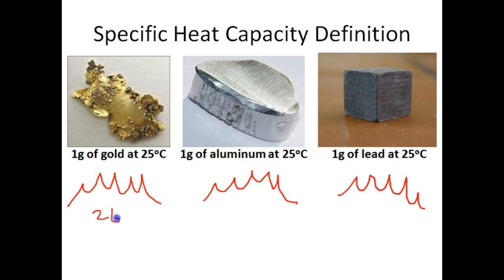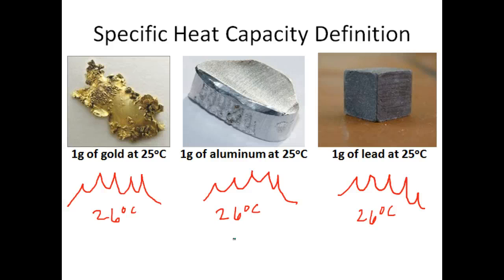We want to raise the temperature of the gold one degree Celsius to 26 degrees, same with the aluminum and the lead. Will each one of these substances require the same amount of energy to raise their temperatures one degree Celsius? We have the same masses, so conventional wisdom might say yes, but that is not the case. And that is because of a concept known as specific heat capacity — the amount of thermal energy required to raise the temperature of one gram of a substance one degree Celsius. Each substance has its own specific heat capacity.